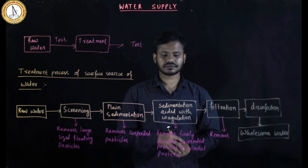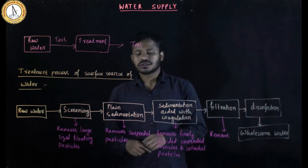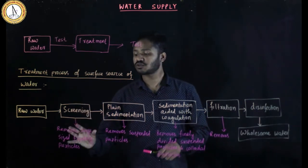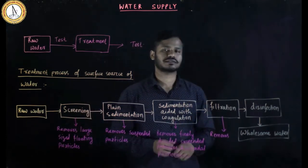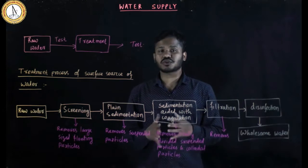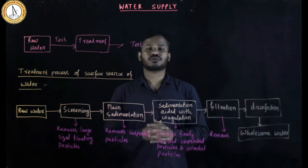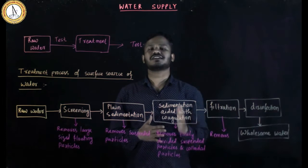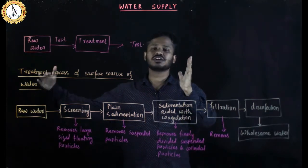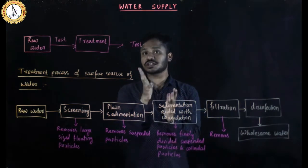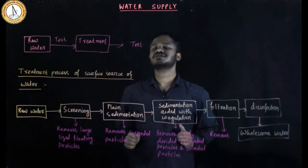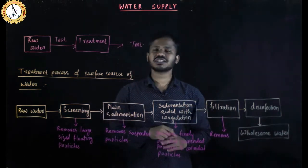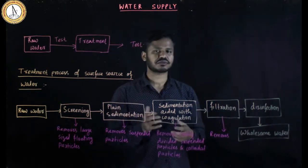In screening, large sized floating particles are removed — for example, plastic bottles and broken branches of trees. Inclined screens are provided and the water is passed through them so that large sized particles get captured. These particles can be organic or inorganic.